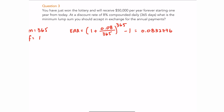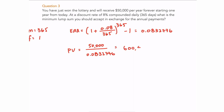Now, since it's an ordinary perpetuity, I'll use the present value formula: payment divided by the discount rate (the EAR). You should get a present value of $600,401.55. This is the minimum lump sum you should accept in exchange for the annual payments — anything more benefits you, and anything less is not worth it.